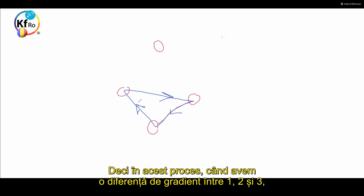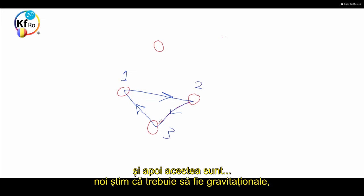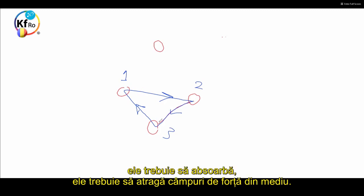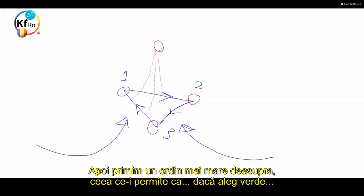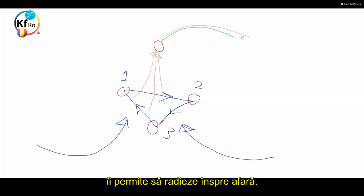In this process, when we have a gradient difference between one, two and three, these have to be gravitational, they have to absorb, they have to pull in field forces from the environment. And then, what these field forces become, in going through the center, they amalgamate. And then we receive a higher order in the top, which allows this to radiate out.